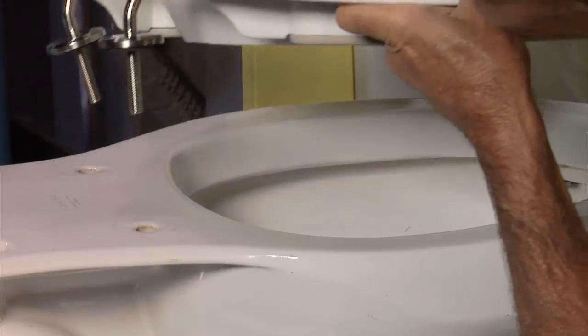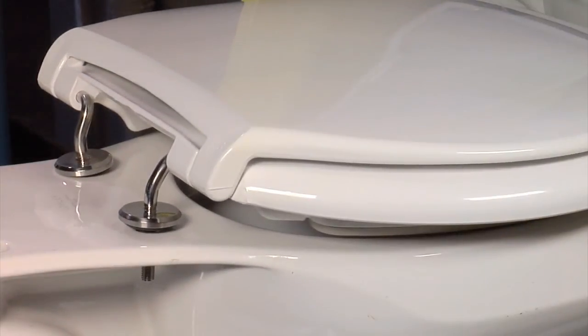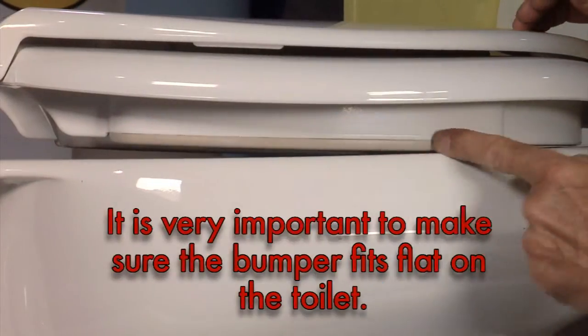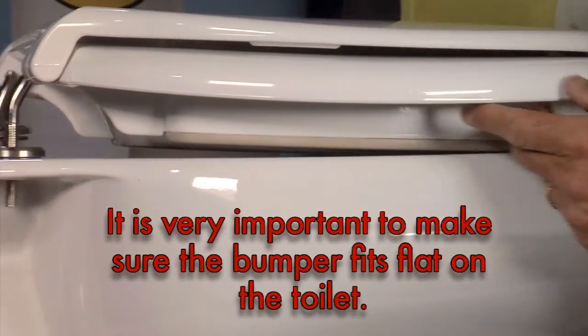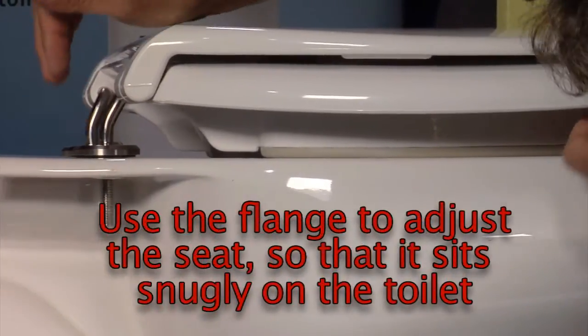Place the hinges through the existing holes in the back of your toilet. If the bumper doesn't sit flat on the toilet, adjust the flange so that it does.